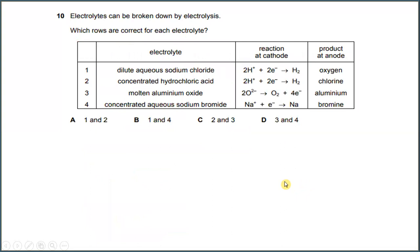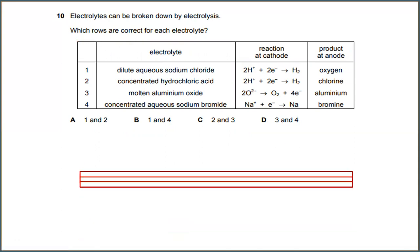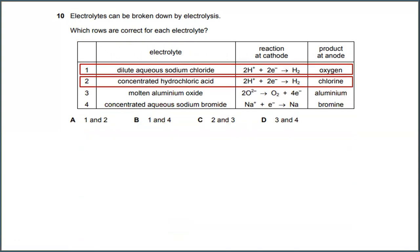Number 10. Electrolytes can be broken down by electrolysis. Which rows are correct for each electrolyte? The rows that represent electrolytes are number 1 and number 2. So the answer for this would be A.